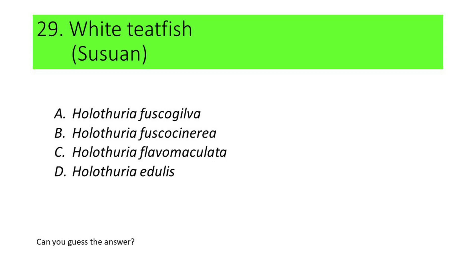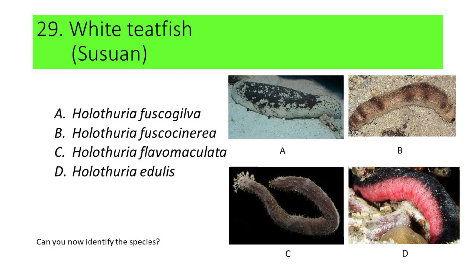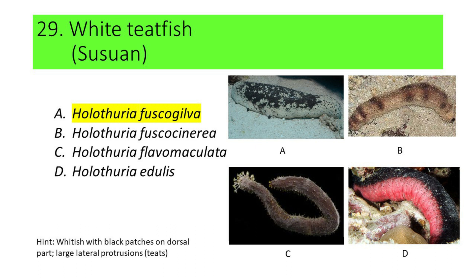If not, here are the pictures. A. Holothuria fuscogilva, B. Holothuria fuscosineria, C. Holothuria flavomaculata, and D. Holothuria idolis. Can you now identify the species? If not, here's another hint. The color of this species is whitish, with black patches on the ventral portion. This species has large lateral protrusions called teats. If your answer is A or Holothuria fuscogilva, you're correct. Holothuria fuscogilva is also called white teatfish, and locally called susuan.